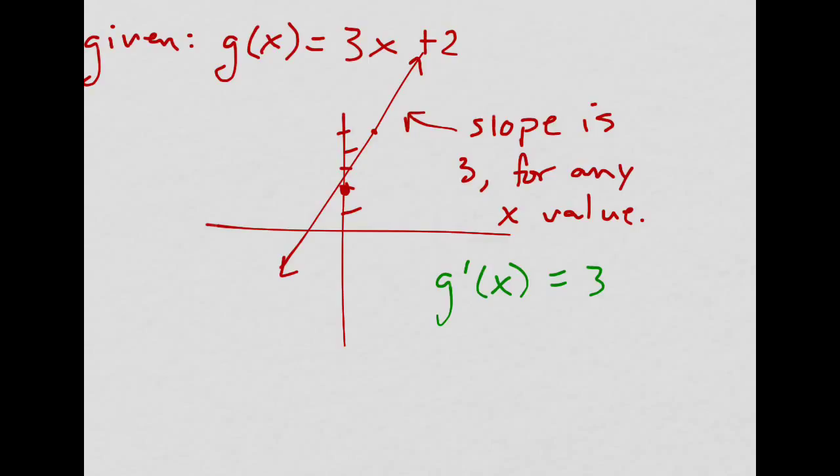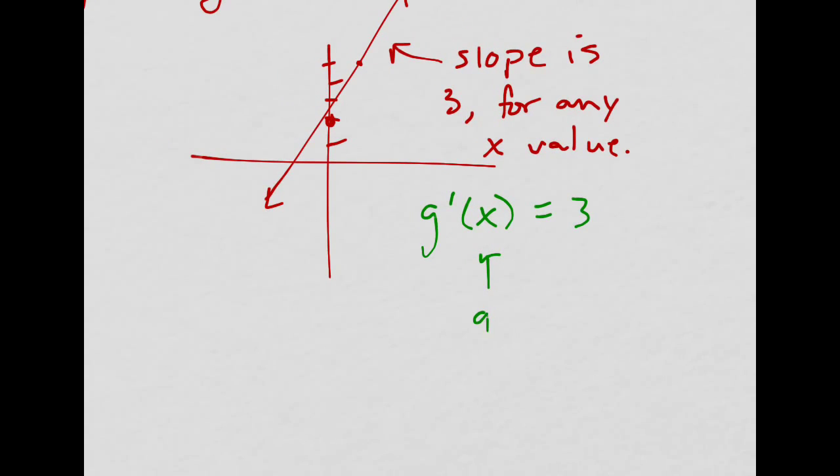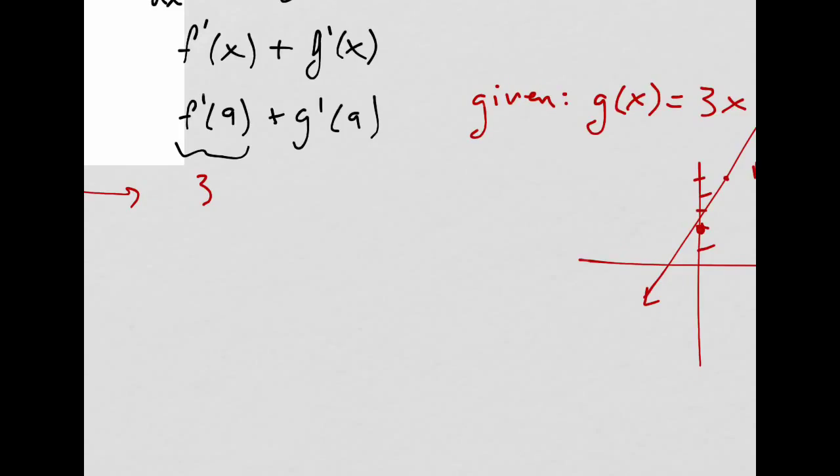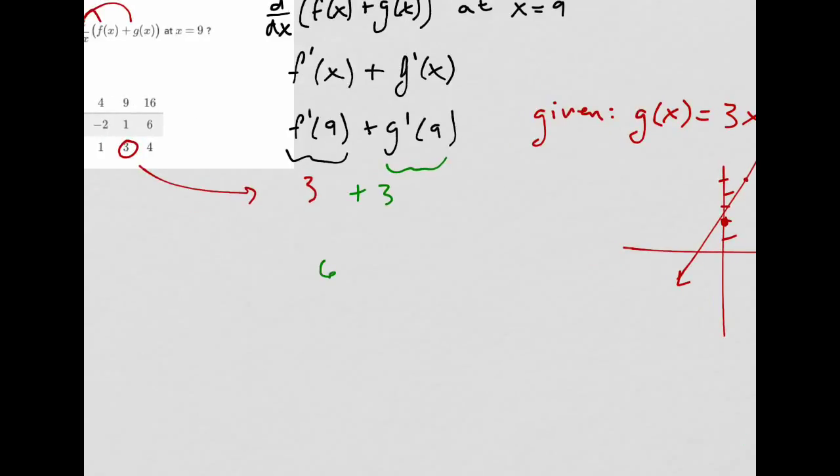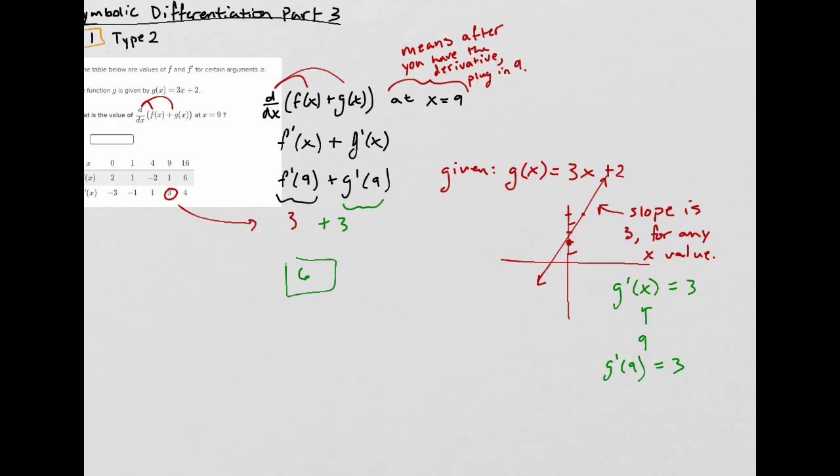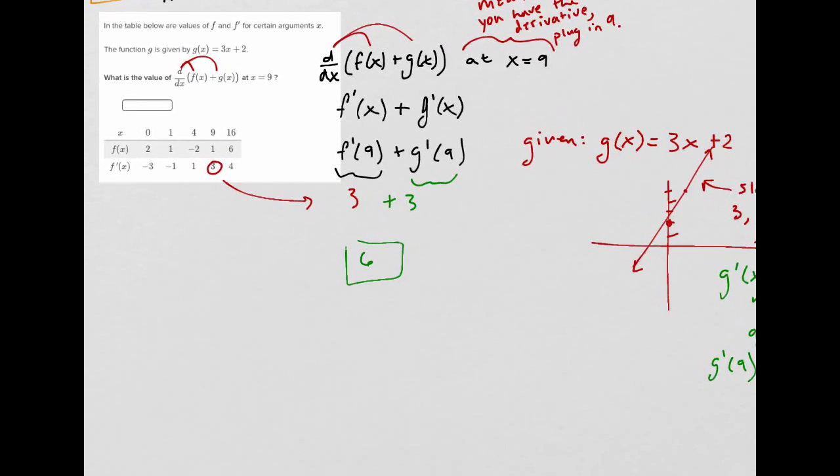All right. That's nice. If I plug in a 9, well, g prime of 9 is still 3, because it's saying the slope is 3 for any x value. So this part here is 3. So we get 6. Isn't that fantastic? That was easy. Yeah, you should write that stuff down. Maybe.